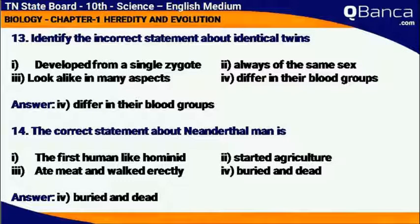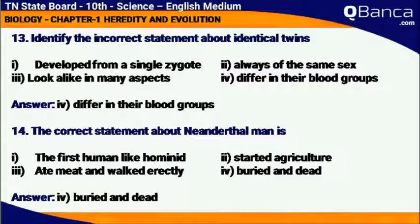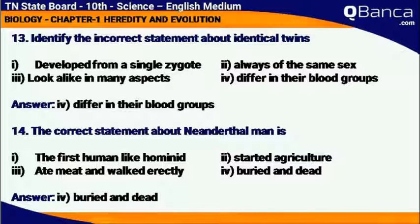The correct statement about Neanderthal man is: A — the first human-like hominid; B — started agriculture; C — ate meat and walked upright; D — bury the dead. Answer: D, bury the dead.